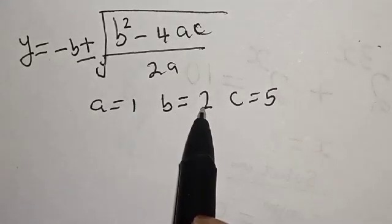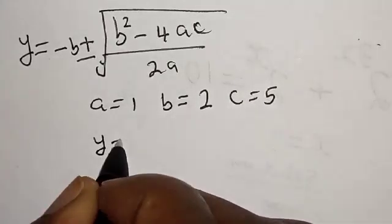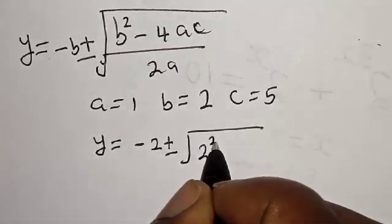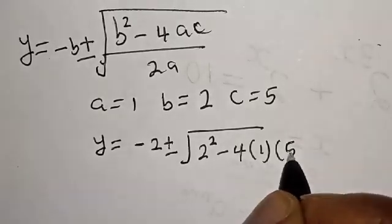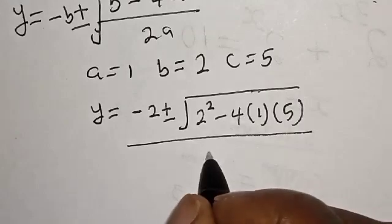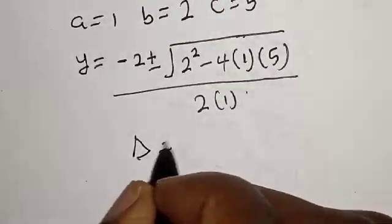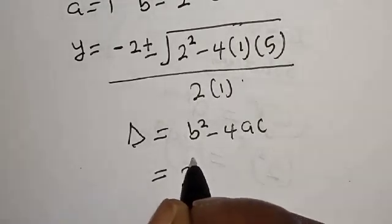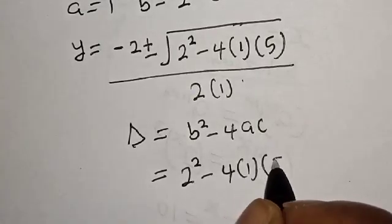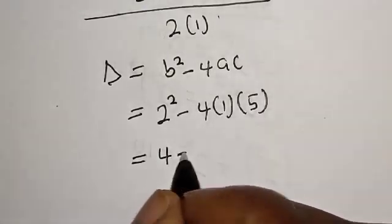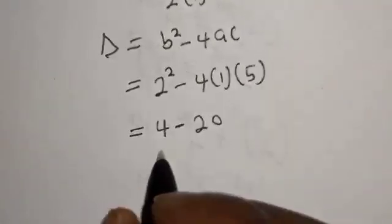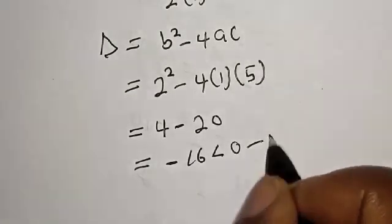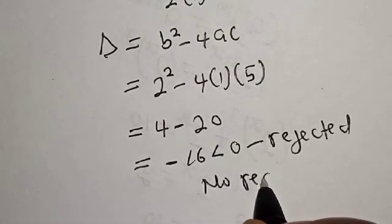From the equation y squared plus 2y plus 5, a equals 1, b equals 2, and c equals 5. The discriminant is b squared minus 4ac, which equals 4 minus 4 times 1 times 5, equals 4 minus 20, equals minus 16, which is less than 0. So this case is rejected because it has no real solution.